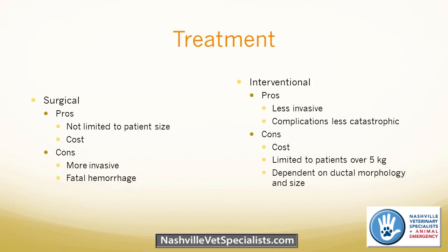For closure of the PDA, there are two main options: surgical or interventional closure. For surgical closure, ideally performed by a board-certified surgeon, it's a lateral thoracotomy where they tie off the ductus from the outside. The pros are that it's not limited by patient size — they can operate on any size dog, including very small dogs around two kilograms. The cost is generally a bit lower; at our hospital we quote about $3,500 for surgical closure.